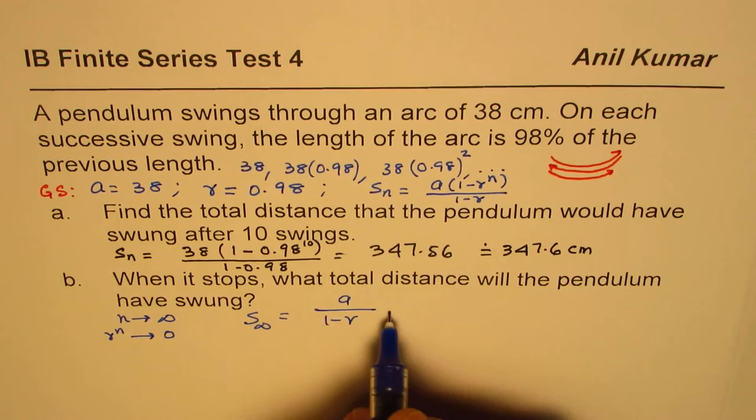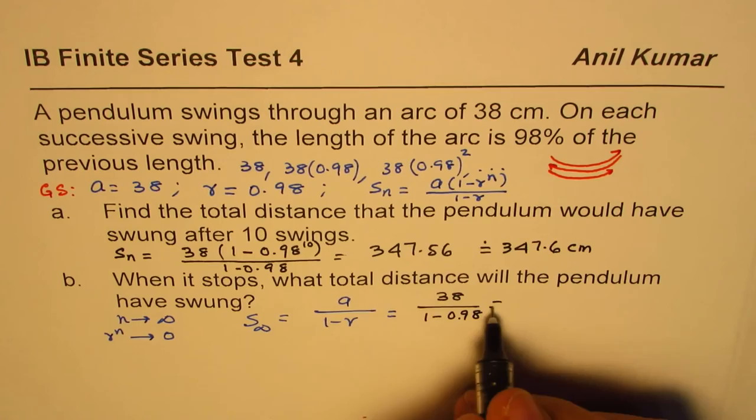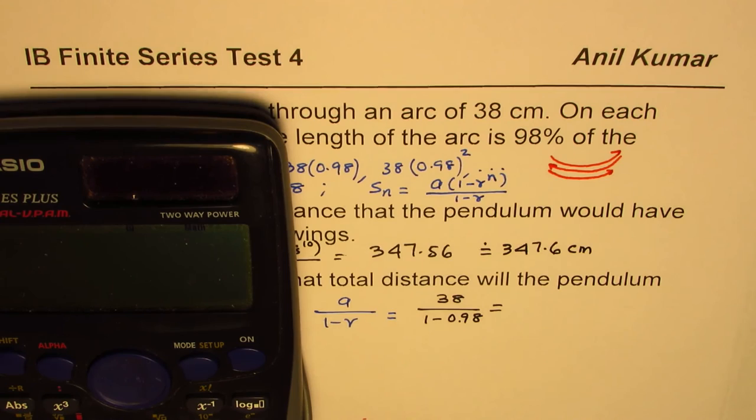Therefore, the formula changes to a over (1 minus r). Let's substitute the values. So a is 38 divided by (1 minus 0.98).